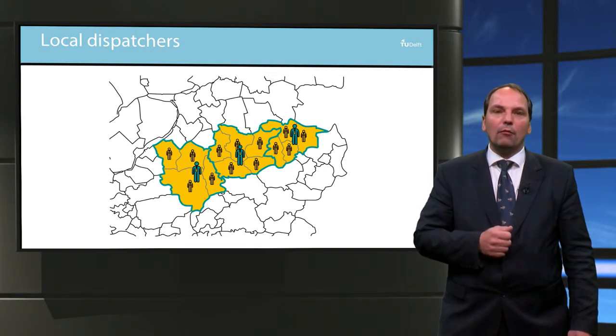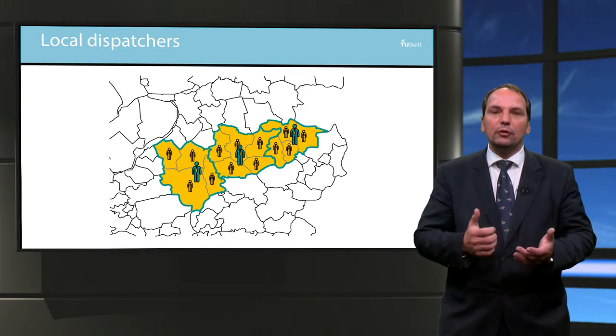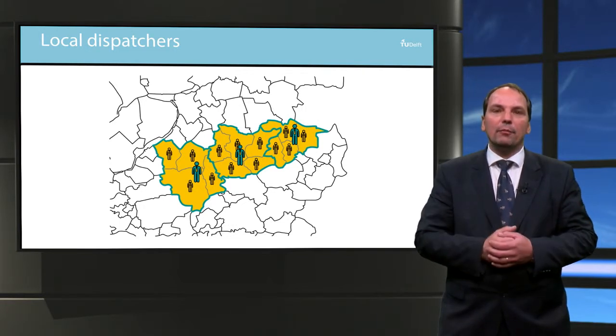The local dispatcher overlooks a larger area. He allocates paths to different trains and manages the remaining rail capacity during deviation on the regular timetabling schedule.